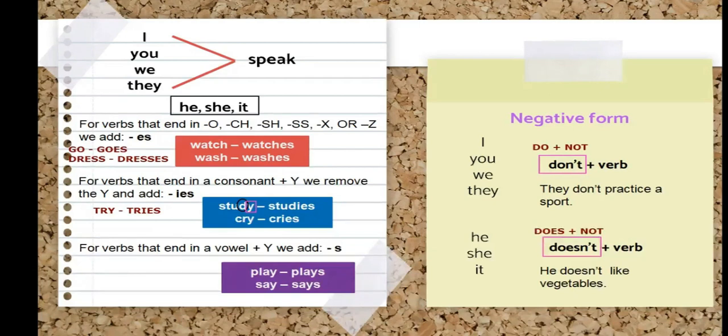When we have the negative form, we don't add the letter S to the verb — that is very important to remember. It's not 'doesn't likes,' it's just 'doesn't like.' We only add E-S with the singular pronouns he, she, and it.